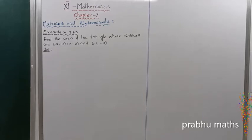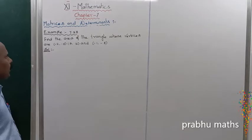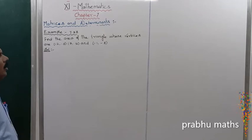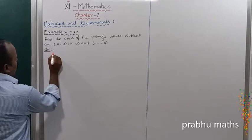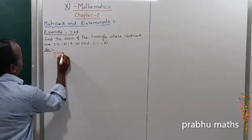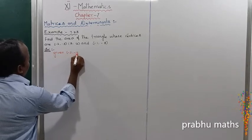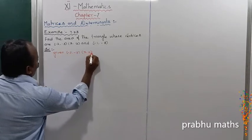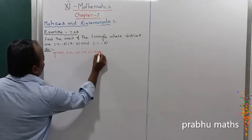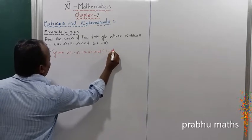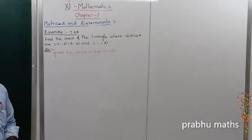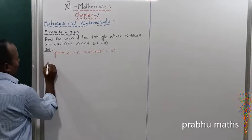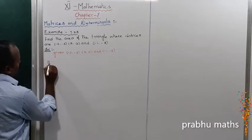Example 7.33: Find the area of the triangle whose vertices are (-2, -3), (3, 2), and (-1, -8). Solution: the given vertices are (-2, -3), (3, 2), and (-1, -8).